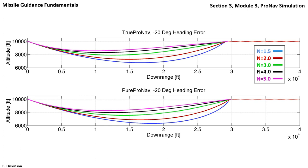For both laws, the larger the navigation gain, the faster the course correction, as evidenced by the shorter distance taken from the start to the intercept.